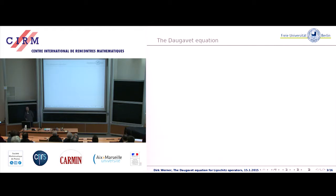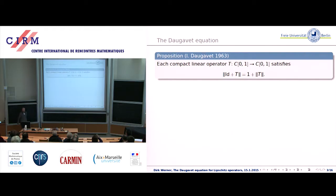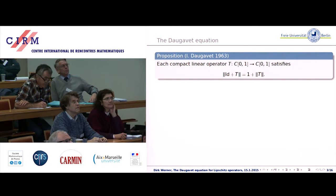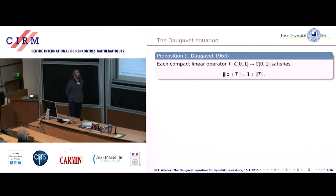Let's begin with what is called the Daugavet equation. It is this proposition proved by the Russian mathematician Igor Daugavet. In his paper he says this is an easy proposition that is at the same time very surprising. Shortly afterwards, a number of papers appeared dealing with the question, which other Banach spaces can appear in this proposition in place of C[0,1]?